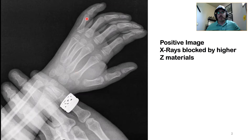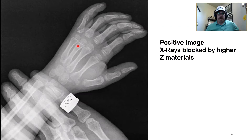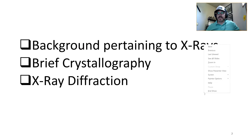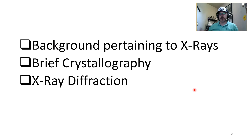Bones actually block some of the x-rays, and where the x-rays pass through, you can interpret the image. The positive image might actually be a better way to interpret the results of the radiograph. This next series of lectures will cover background on x-rays, brief crystallography, and x-ray diffraction. An x-ray diffractometer outputs a line on a screen, so we have to teach ourselves to interpret a line on a screen rather than contrast.